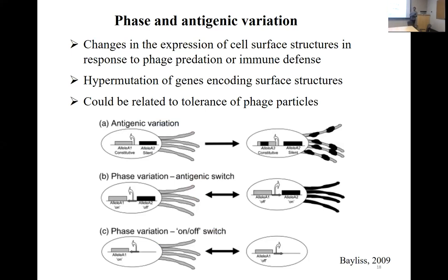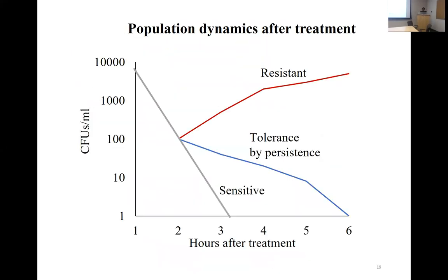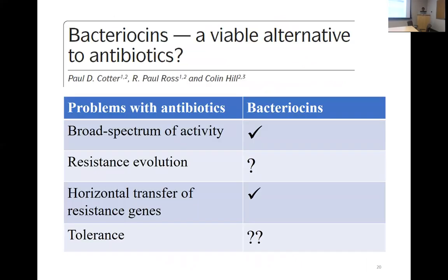This could be another mechanism by which tolerance occurs with our tailocin particles. If all these things are operating, when we apply treatment we should see population dynamics where sensitive cells are killed quickly, persisters survive treatment longer, and then if resistance builds up the population grows again. Our question is: does this happen with Pseudomonas syringae? That is what we're trying to answer.